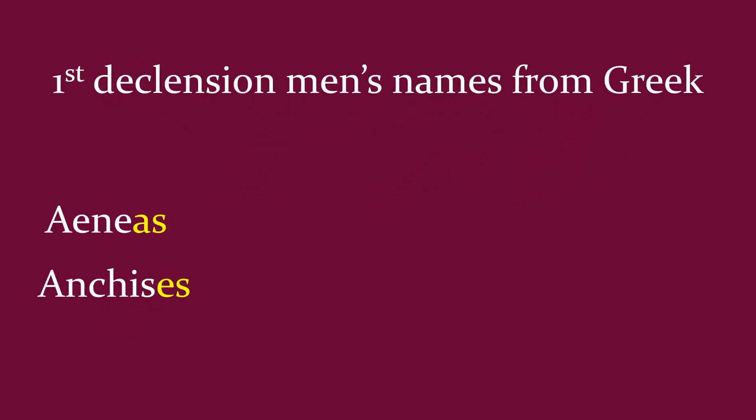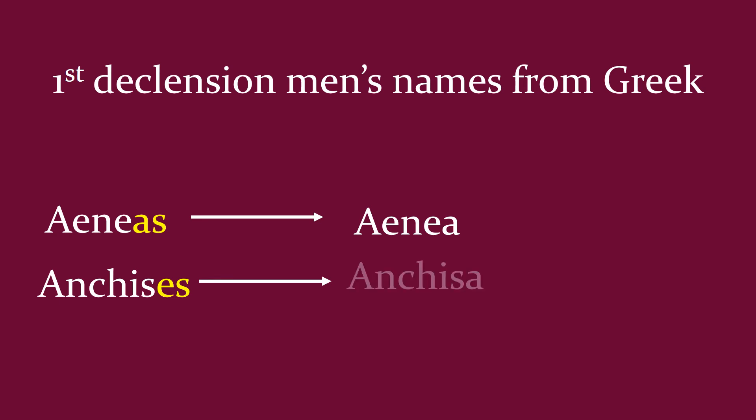The only other exception is for first declension men's names from Greek. It's a very, very small category. So Aeneas — when Aeneas is doing something, that's the nominative case. But if we speak to him, we're going to call him Aenea. His father Anchises, as we call him in English, will similarly follow this pattern. This is a very small category and you're not going to see too many of these, but Aeneas is often addressed.